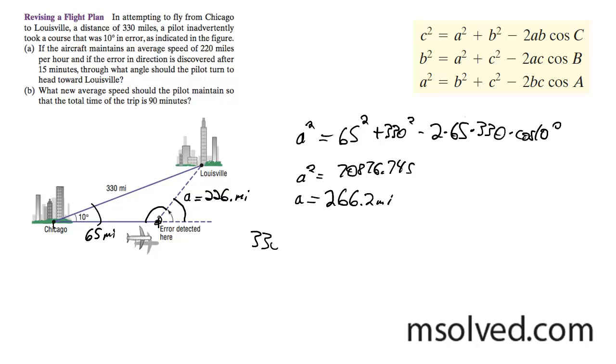So I'm going to do 330 squared is equal to 65 squared plus 266.2 squared minus 2 times 65 times 266.2 cosine A. And after manipulating all this, I get angle A is equal to arc cosine of negative 0.977, which gives me 167.707 degrees, or 167.7.